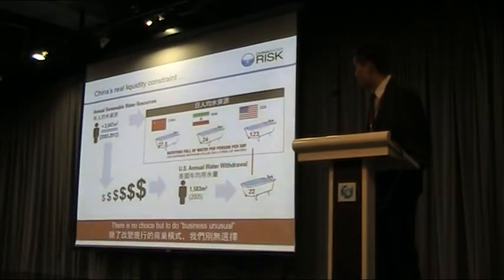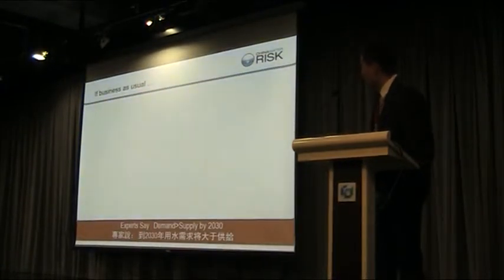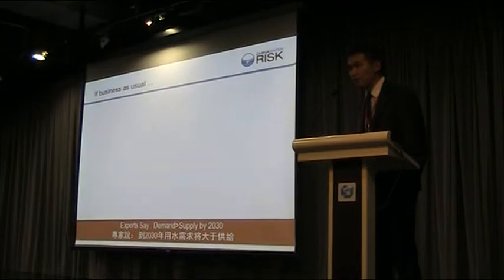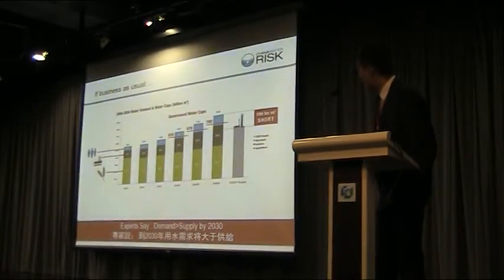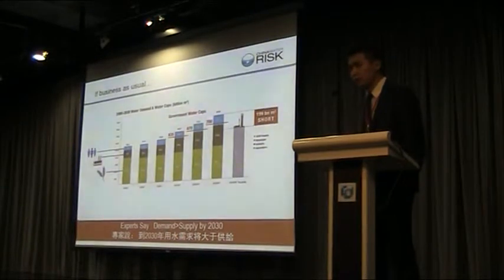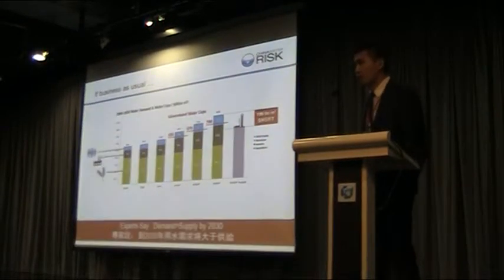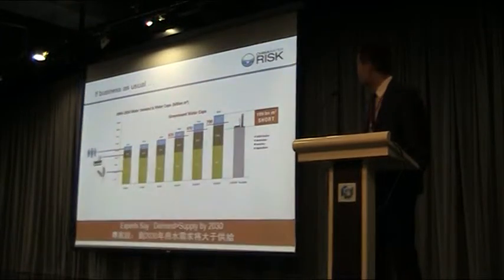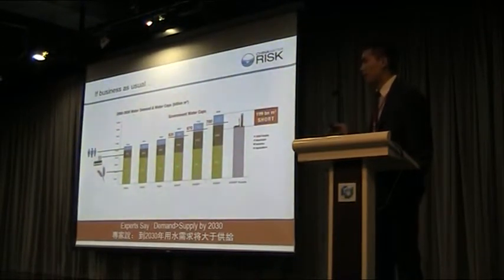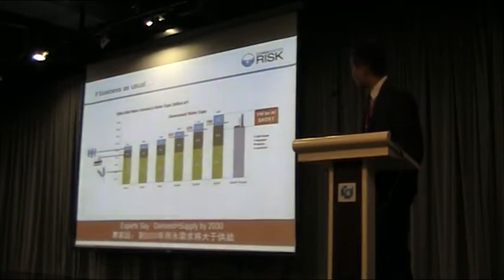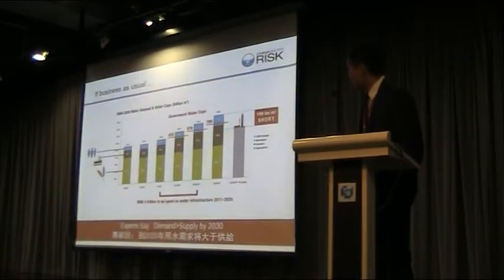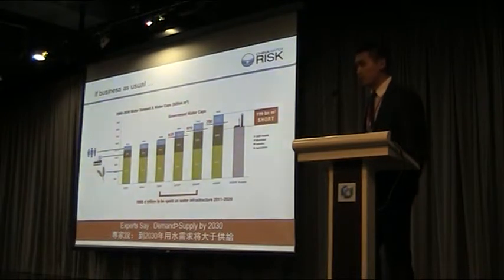We have to do business unusual. If we continue with business as usual, experts say that demand by 2030 will exceed supply — and not by just a little. We could end up with a 199 billion cubic meter water shortage, meaning we would be unable to supply water for the whole population, which is equal to one third of industrial use. So the government wants to curb water use by putting caps by 2015, 2020, and 2030, and also boost supply by planning to spend 4 trillion RMB to upgrade water infrastructure to 2020.